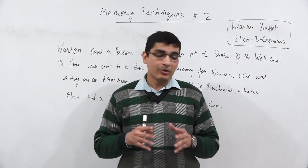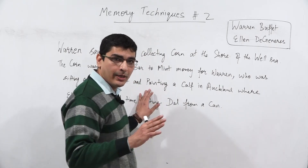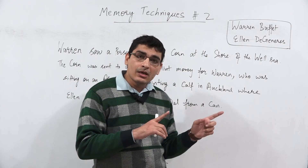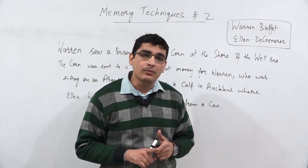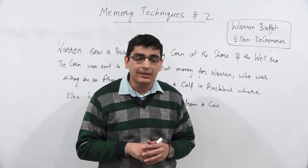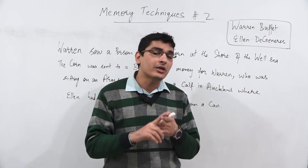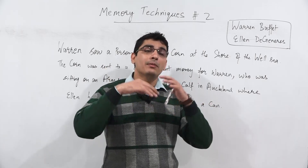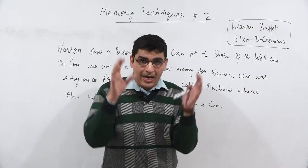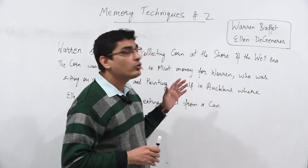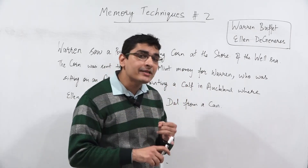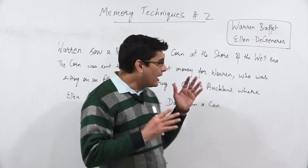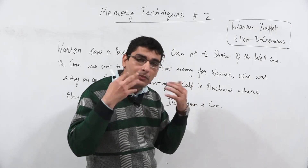Before we discuss today's techniques, let us go through this story. In the previous video we talked about the peg system, wherein we got the idea that the human brain is good at remembering stories, images, colors, sounds, maps, positions, and locations, but it is not so good at remembering random facts and random numbers. Today we are going to study how random facts and numbers can be remembered better.